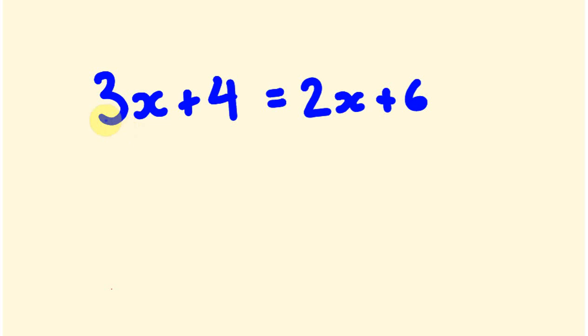Do you notice we have four different numbers here. We have 3x, we have positive 4, we have positive 2x and we have 6. So we're going to solve this by basically grouping all the x numbers on one side of the equation and all the other numbers on the other side of the equation.